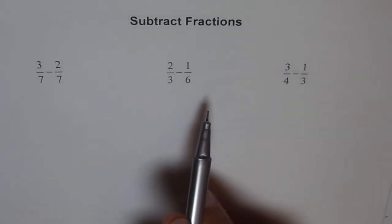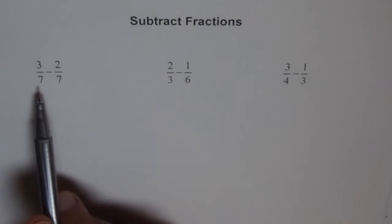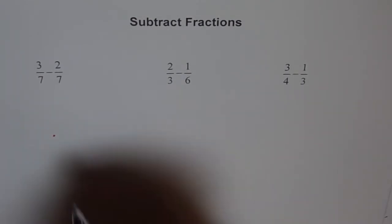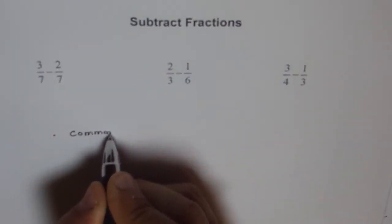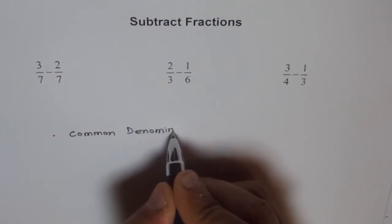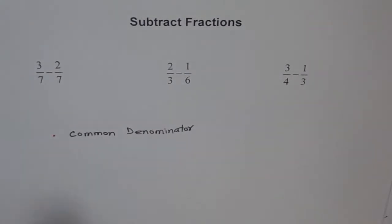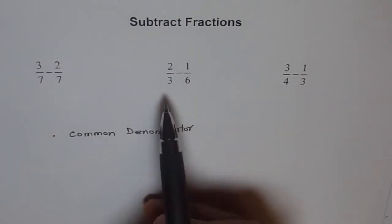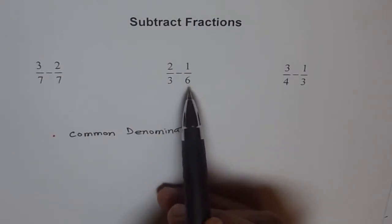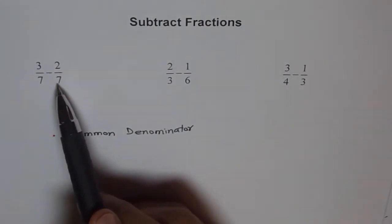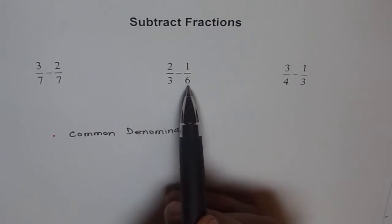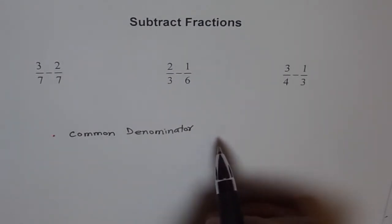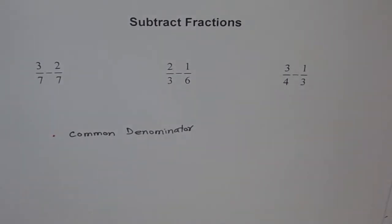Before adding or subtracting fractions, first and foremost we should have a common denominator. Look here — 7 and 7 have the same denominator, but 3 and 6 are not the same, and 4 and 3 are also not the same. These fractions are 7th parts, 3rd parts, 6th parts — they should be equal parts when you add or subtract, so the whole has to be divided into equal parts first.